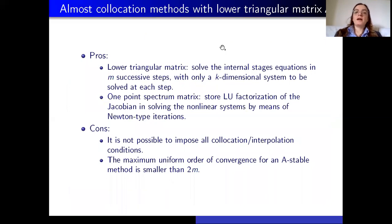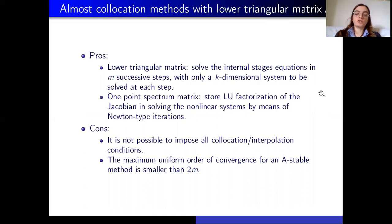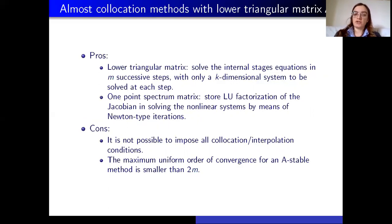We want to develop a method with a triangular matrix A. The pros are that a lower triangular matrix A permits us to solve the internal stage equations in successive steps, with only a k-dimensional system to be solved at each step, where k is the dimension of the initial value problem. So the computational effort is reduced. In addition, if we have a one-point spectrum — meaning the elements on the diagonal are all the same — we can also reuse the LU factorization of the Jacobian when solving the system using Newton-type iterations, further reducing the computational cost.